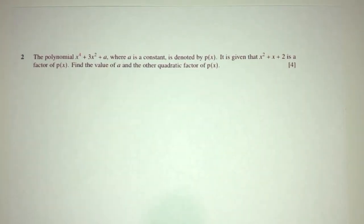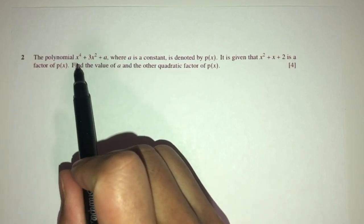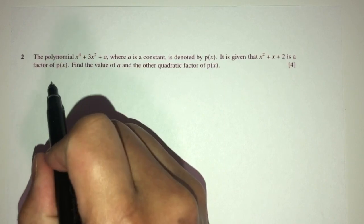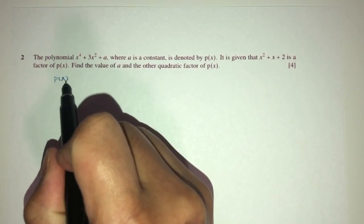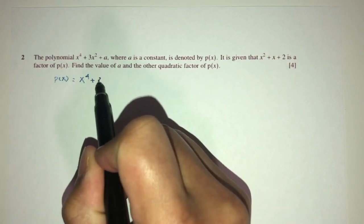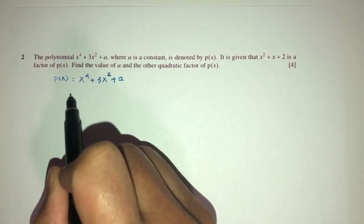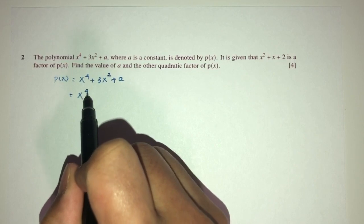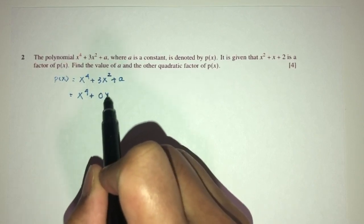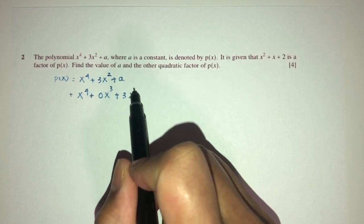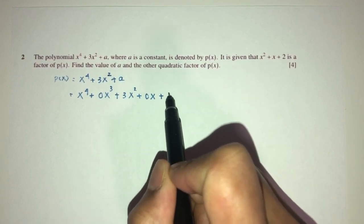Let's move on to question number 2. Here we have a polynomial which is denoted by p of x. p of x was given by x power 4 plus 3x square plus a. Now, we can rewrite this. We have x power 4, 0x cube, we don't have cube. So let's write this down.